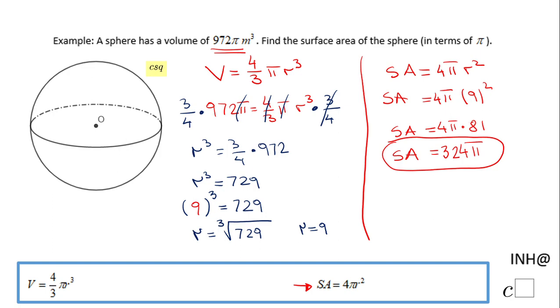So the surface area of a sphere that has a volume of 972π cubic meters is 324π square meters. So let's use the unit since we have the unit in this problem.